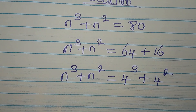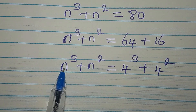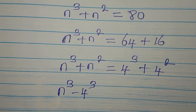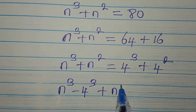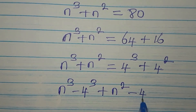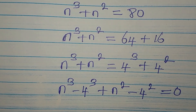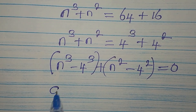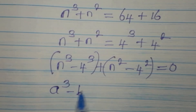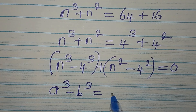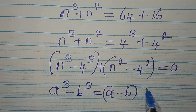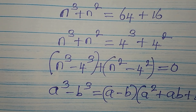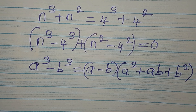So let's rearrange: we'll have n³ minus 4³, plus n² minus 4², and equate to 0. We'll deal with these separately. Remember: a³ minus b³ equals (a minus b)(a² + ab + b²).